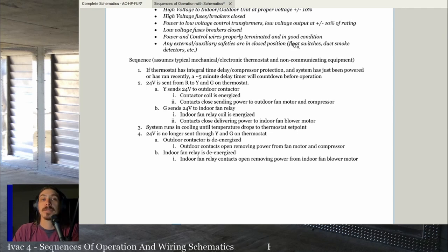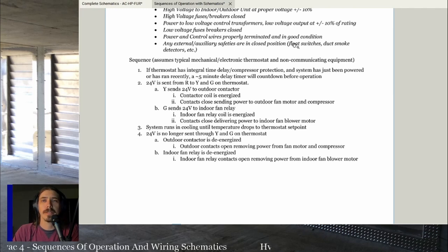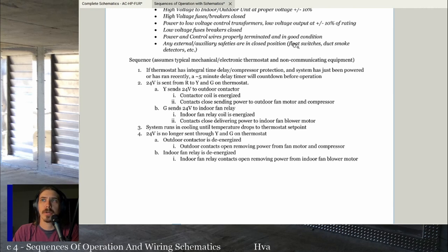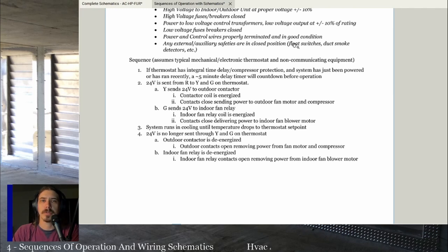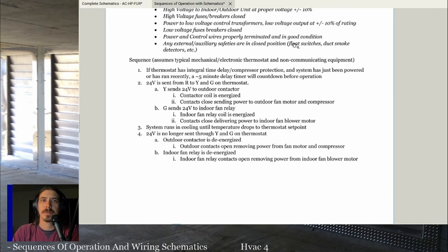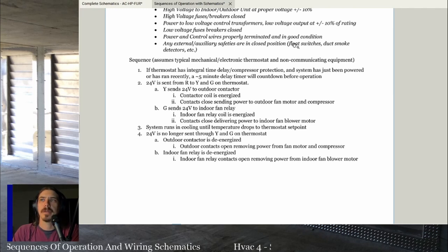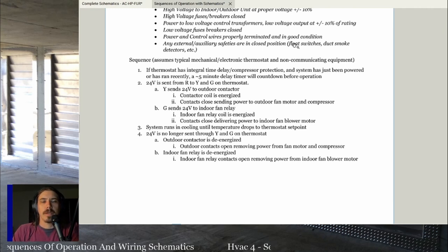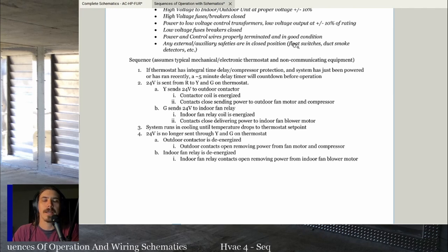Let's talk about a typical air conditioner sequence of operation. One thing to keep in mind is the sequence assumes a typical mechanical or electronic thermostat on non-communicating equipment — as simple as it gets, just straight AC, most likely a residential split system. The thermostat has an integral time delay or compressor protection. When the system has just been powered on or recently powered, you'll have a five-minute delay timer — it could be three, it could be five — that counts down before anything operates.